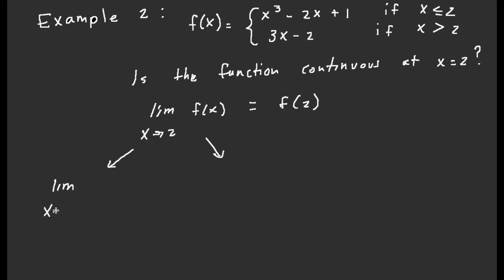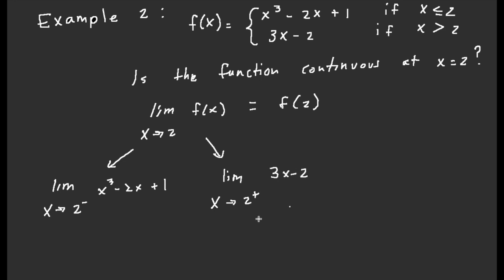The limit as x approaches two from the left uses x cubed minus 2x plus 1. Plugging in two: two cubed minus eight minus four plus one gives us five. The limit as x approaches two from the right uses the bottom function — plugging in two gives us six minus two, which is four.